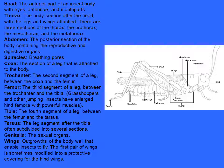The thorax is the body section after the head, bearing the legs and wings. The thorax itself is further divided into three parts: the prothorax, the mesothorax, and the metathorax. The abdomen is the posterior section of the body, containing the reproductive and digestive organs.